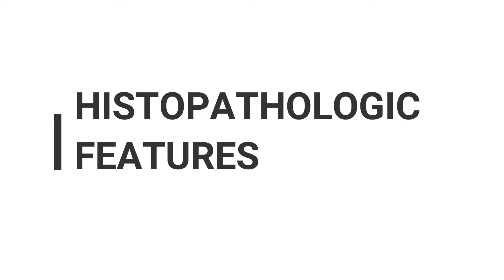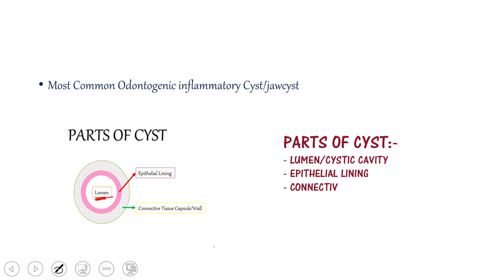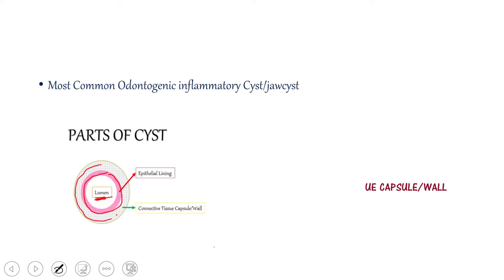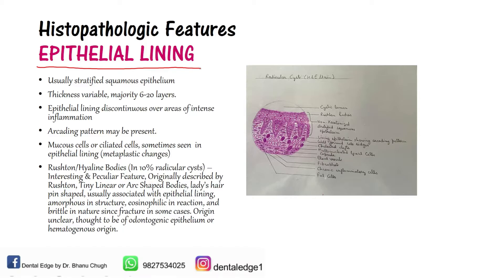Coming to the histopathologic features, we will look at them in 3 parts — the lumen, epithelial lining, and connective tissue wall. The epithelial lining is usually stratified squamous epithelium. Stratified means multiple layers; squamous means flat cells. The thickness is variable — the majority of times it is 6 to 20 layers thick. This epithelial lining may be discontinuous over areas of intense inflammation.